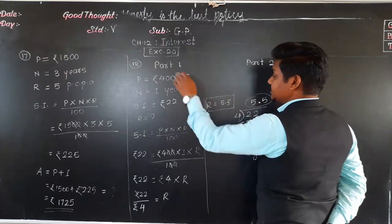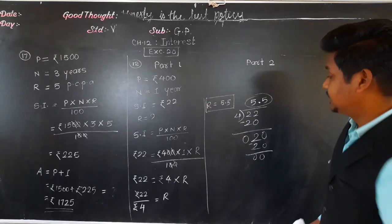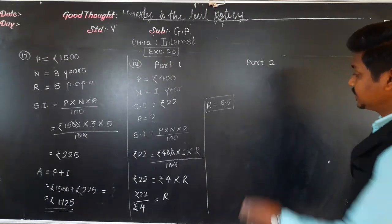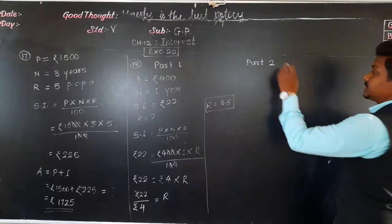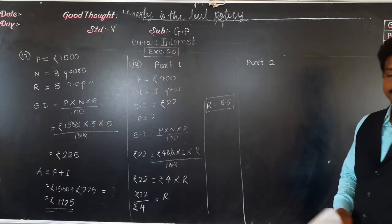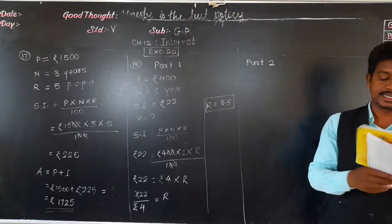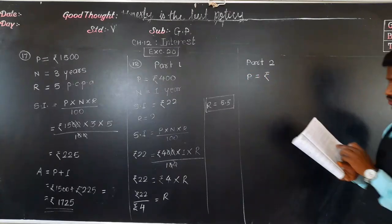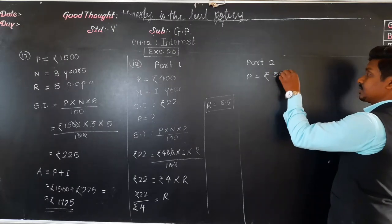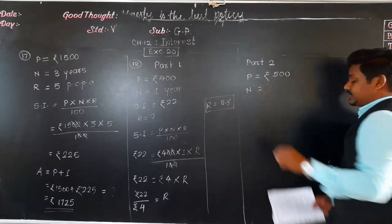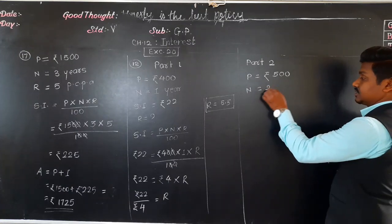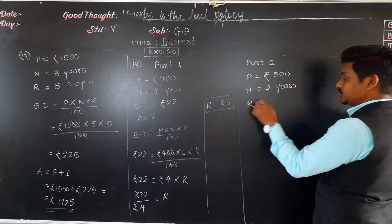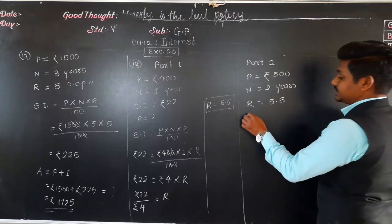The rate of interest in Part 1 is 5.5% per annum. Using this same rate of interest, we solve Part 2. In Part 2, the principal is rupees 500, the period is 2 years, and R is 5.5. We have to find simple interest.